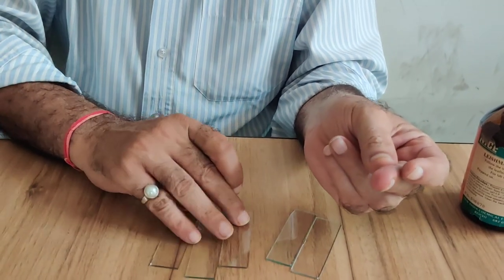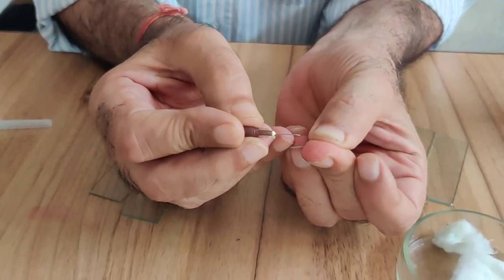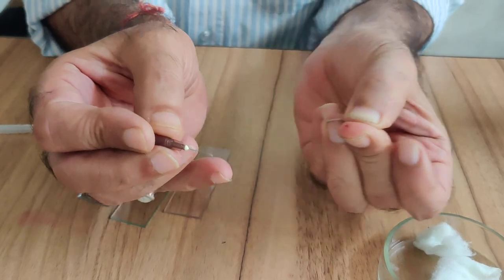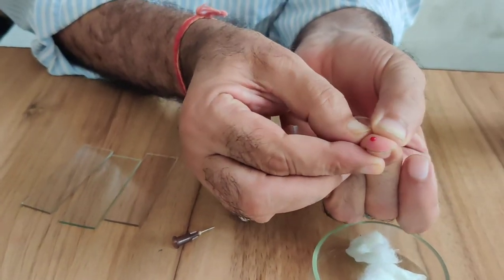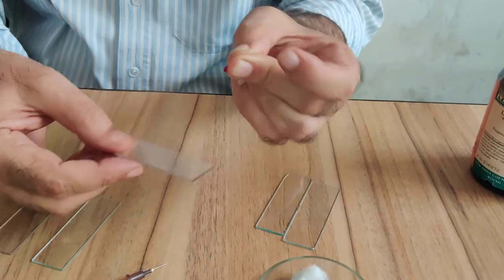Now you have to pierce this needle. Make a pressure here, exert pressure here. Blood will come out. Take this drop of blood on a slide.